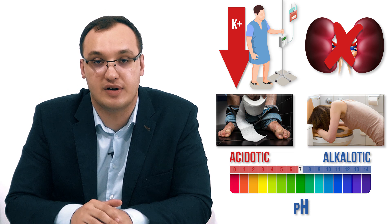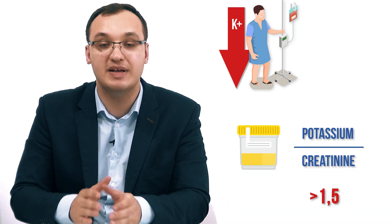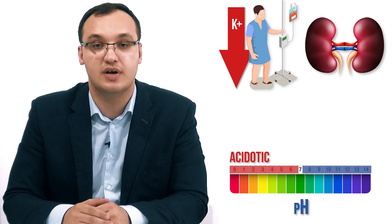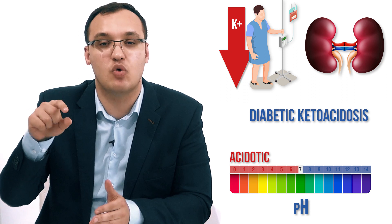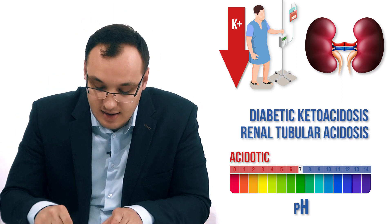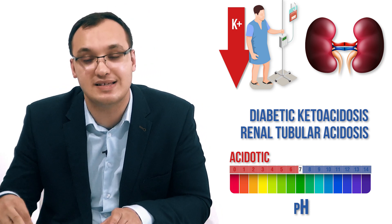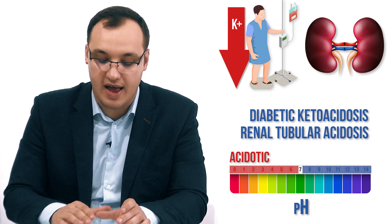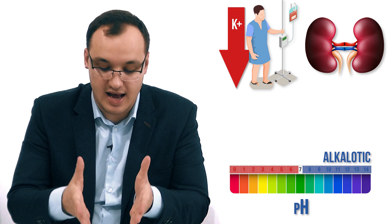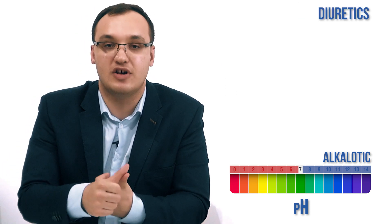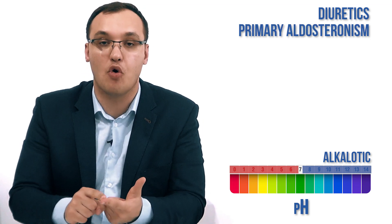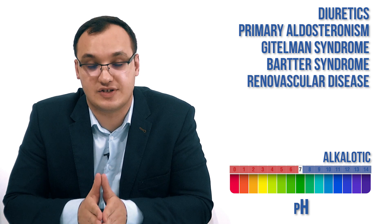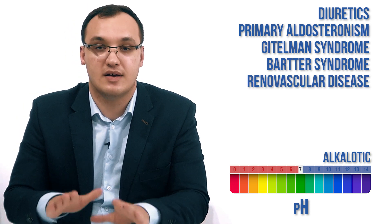Now for high urine potassium — kidney-related: if there's acidosis (low pH), it can be diabetic ketoacidosis or renal tubular acidosis — both names end in 'acidosis,' making them easy to remember. If there's alkalosis with high urine potassium, the possibilities are diuretic use, primary aldosteronism, Gitelman syndrome, Bartter syndrome, or renal vascular disease — five conditions in total.